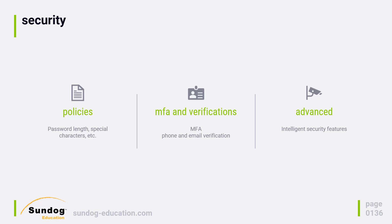Next, we have multi-factor authentication, or MFA for short, and verifications. Multi-factor authentication is when you use an app or a text message to get a special code to verify your login. You can configure whether that's supported for your user pool. You can also configure how certain you want to be about the information that users provide — specifically, you might want to verify that their email address or phone number is correct. Thankfully, you don't have to figure out how to send email or text messages, because Cognito takes care of that for you.